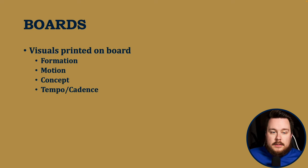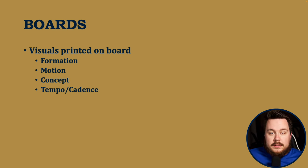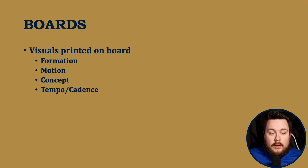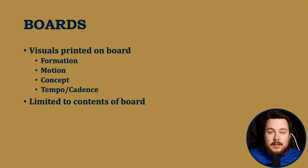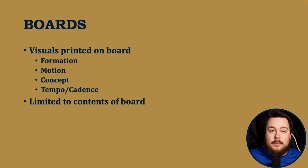Next we have boards. These are visuals printed on the board where pictures can indicate different things: a formation, motion, the concept, and the tempo or cadence. Teams might hold up three different boards, and maybe this drive the middle board is live, next drive the first board is live, and so on — tons of different ways it can be done. But in general we are going to be limited to the contents of the board. A velcro or felt approach can help, but that's a lot to manage between plays without feeling rushed.